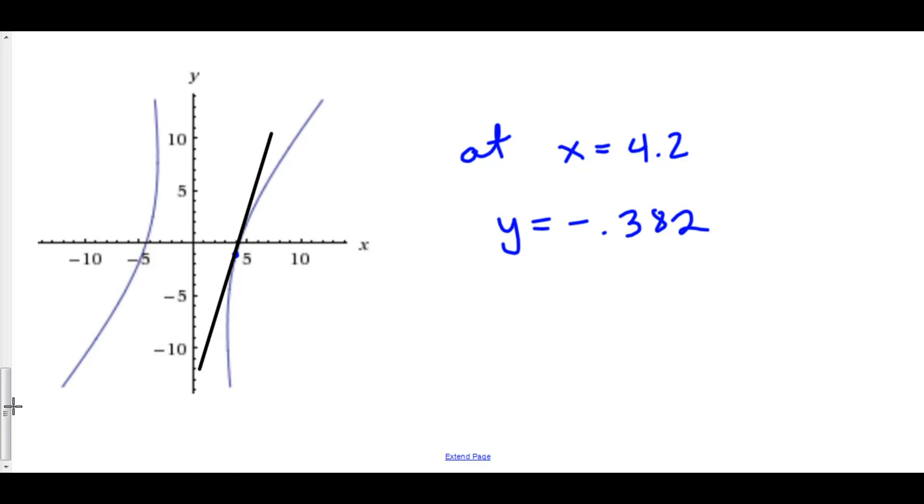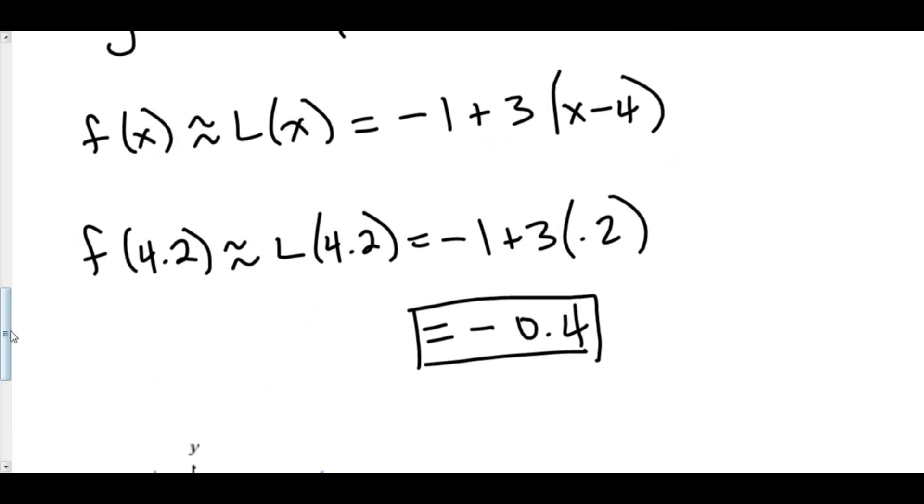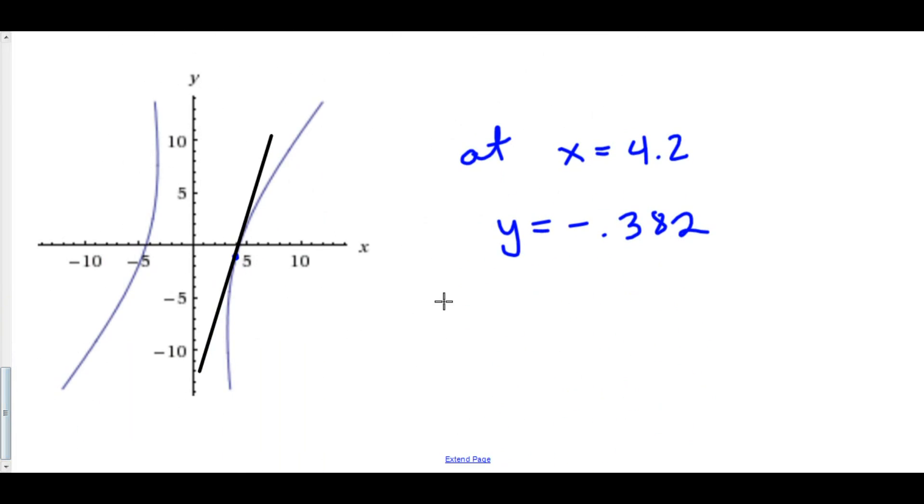Now we got negative 0.4 as our estimation. However, in reality, it's y equals negative 0.382, which is approximately 1 50th away. That's a very good approximation. And so that is the picture of what we just did.